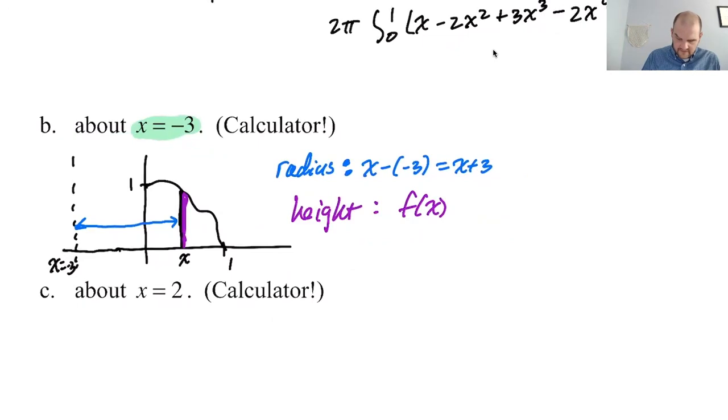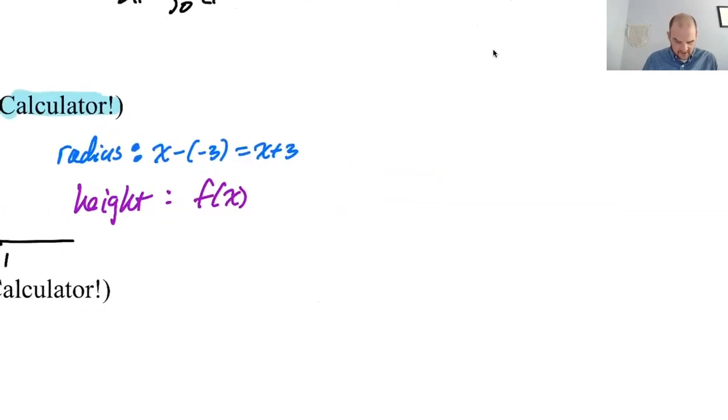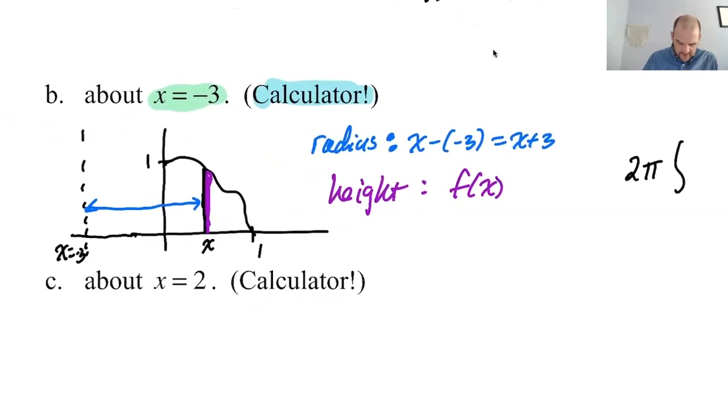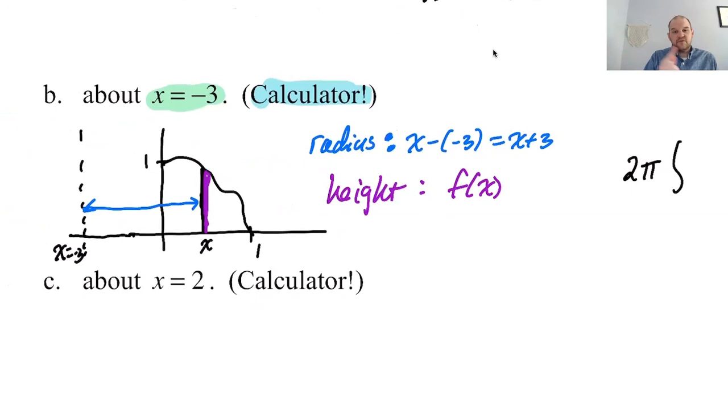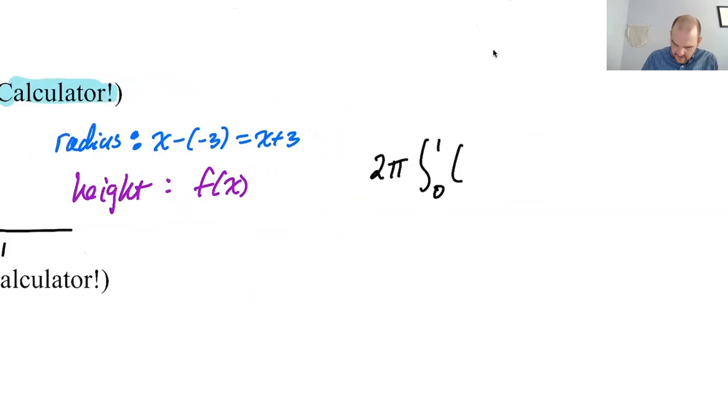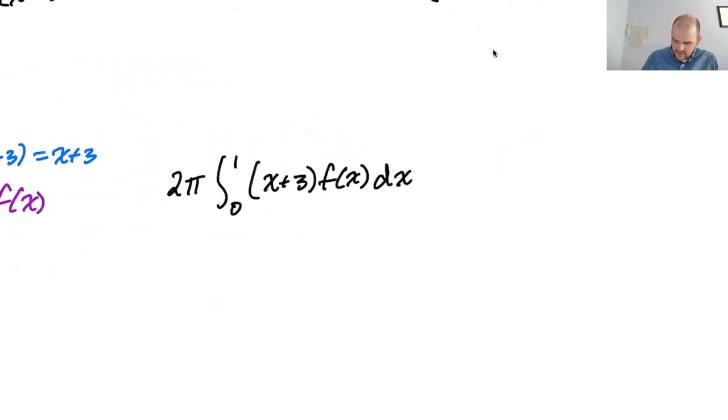And then this question features the best thing that you can see when you're doing these problems - calculator. We're going to use a calculator. So let's set it up and then we'll just use a calculator to get it. So it's going to be 2π, now the sliver that we drew is only allowed to go from 0 to 1. So our bounds are 0 to 1. And then the radius is x + 3. The height, I'm just going to write f(x) dx.